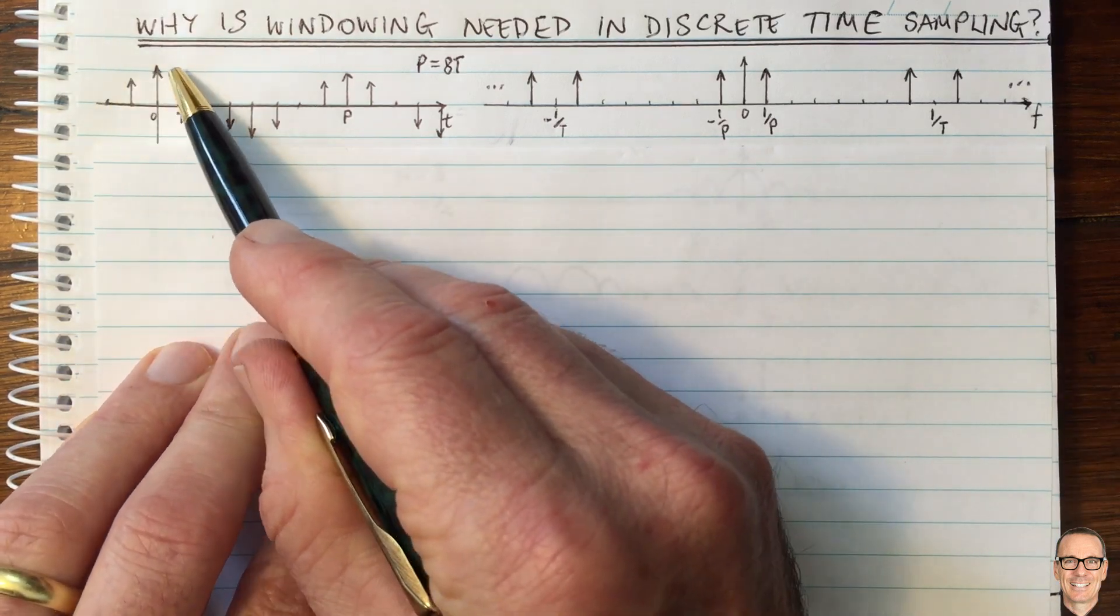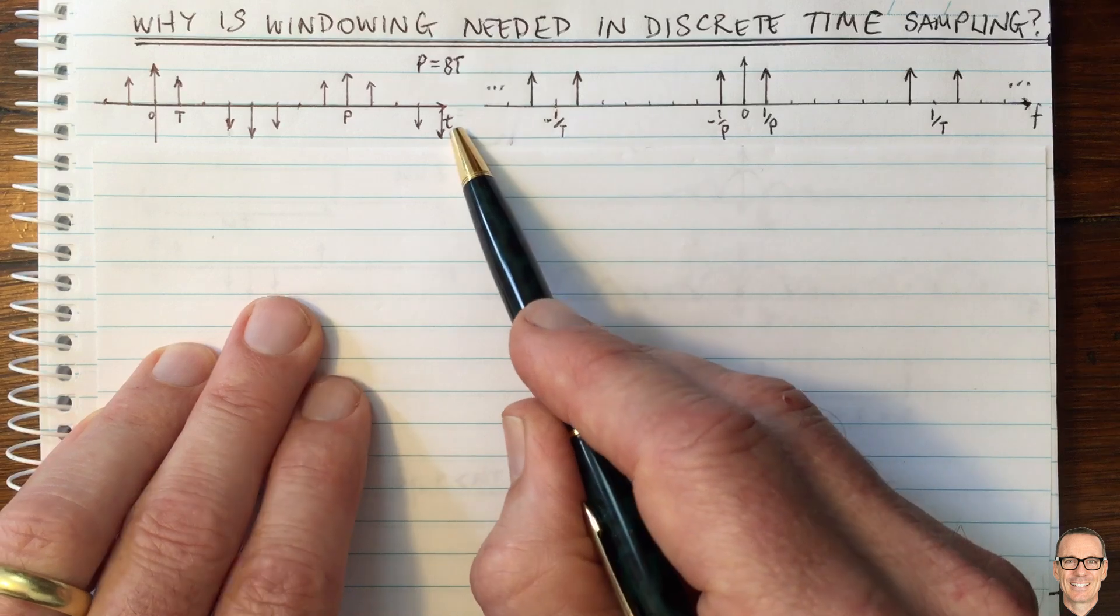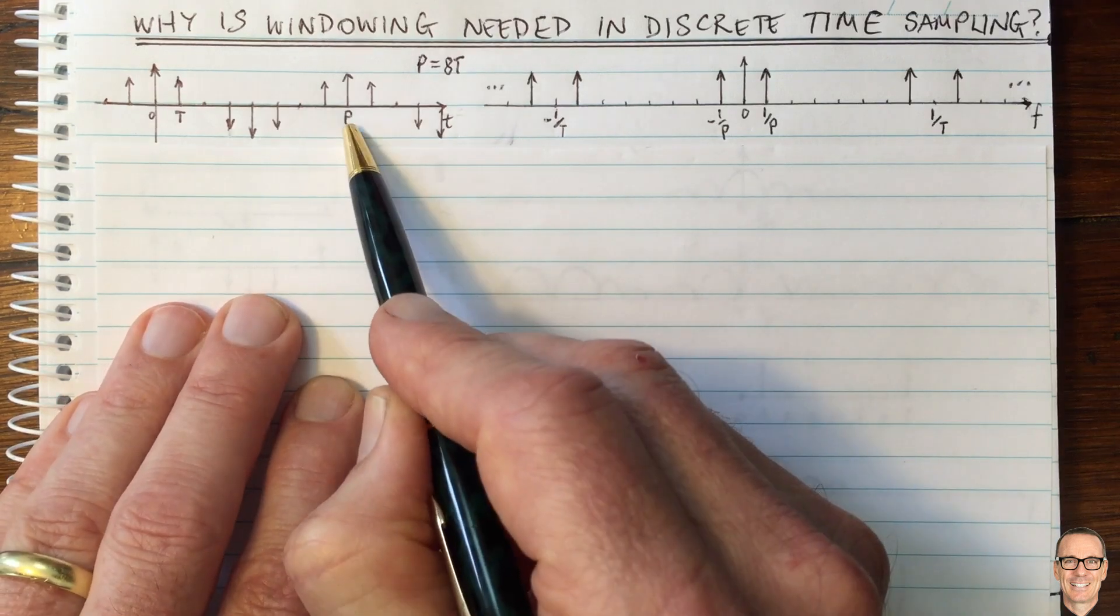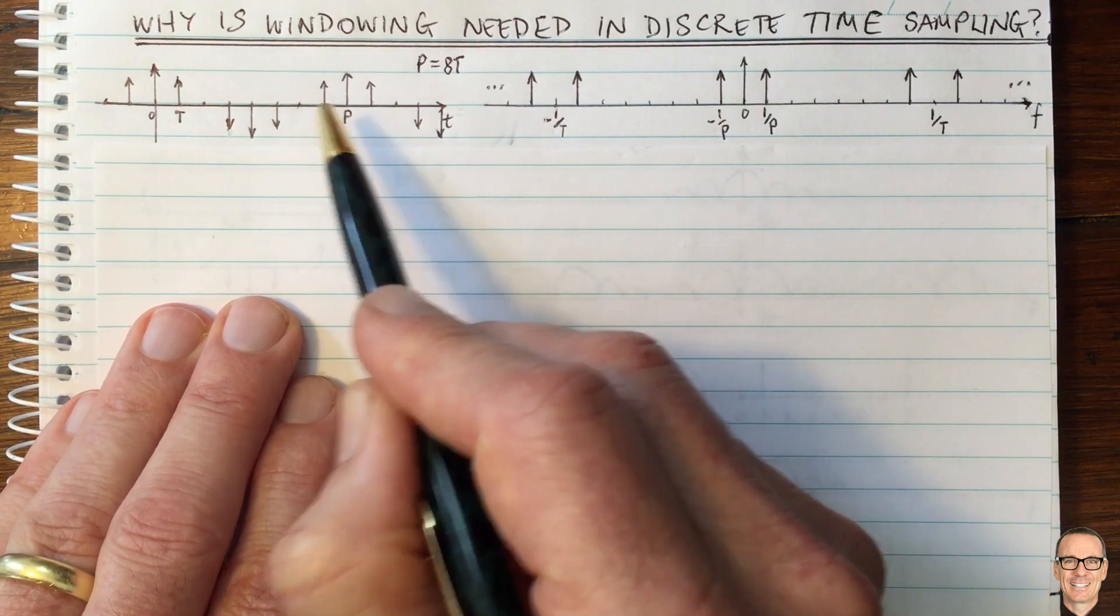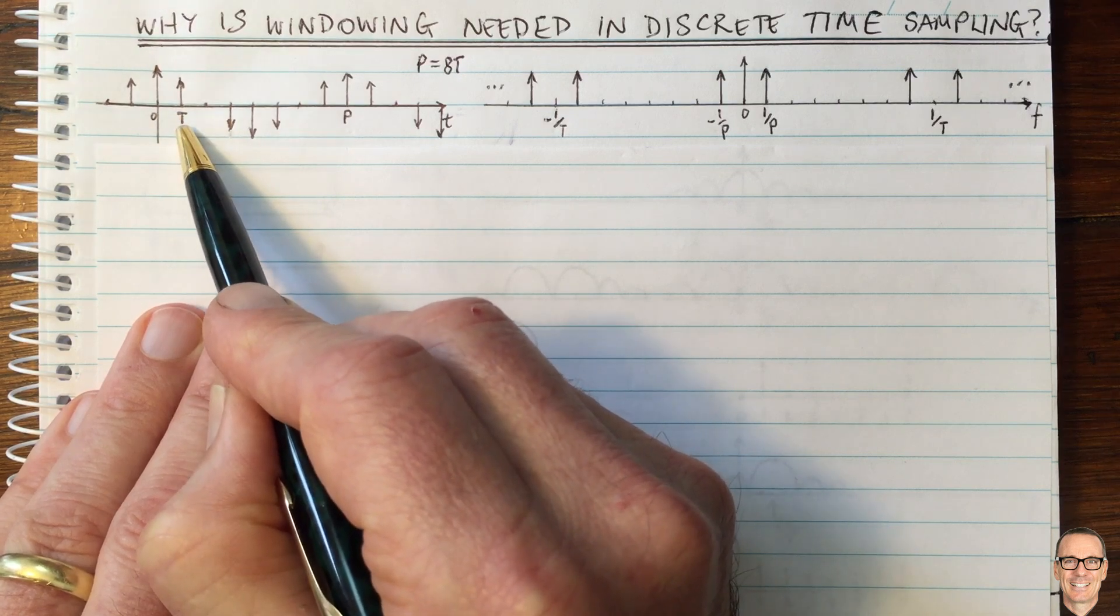Here we've got a sampled sinusoidal waveform in continuous time. The period of the sine wave is capital P, and the sampling period is capital T.